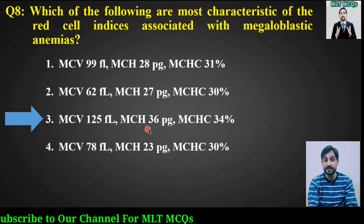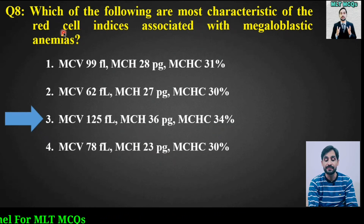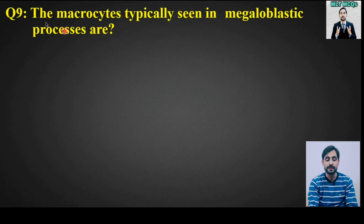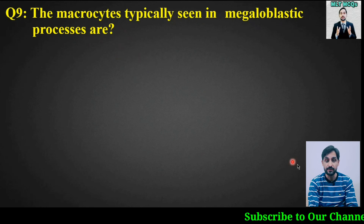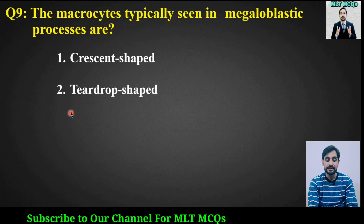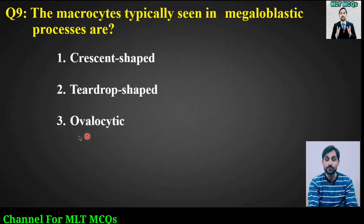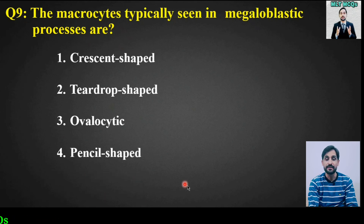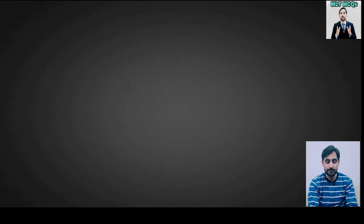MCQ number 9: The macrocytes typically seen in a megaloblastic process — what is their shape? Options are crescent shaped, teardrop shaped, ovalocytic, or pencil shaped. The right answer is option number 3: ovalocytic.